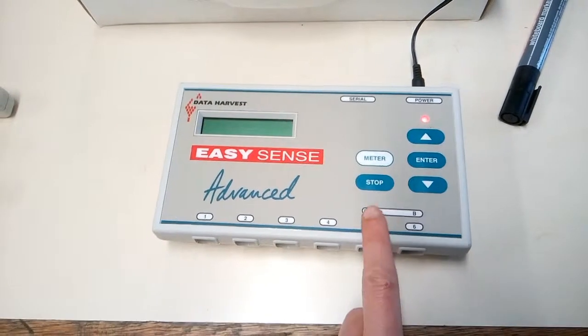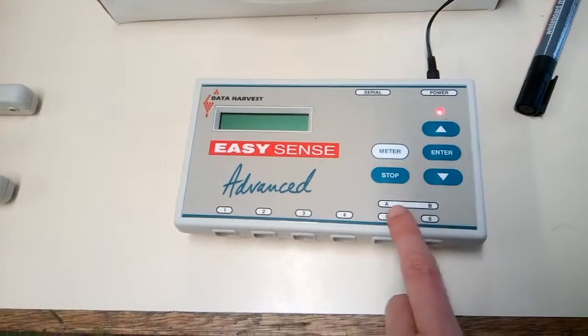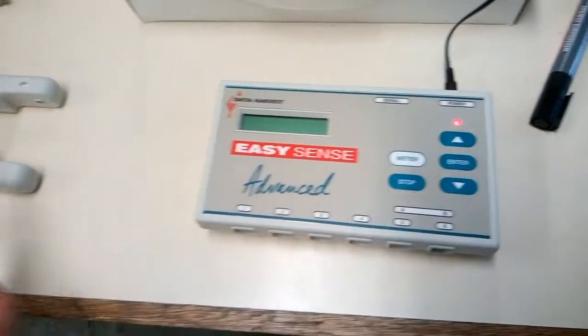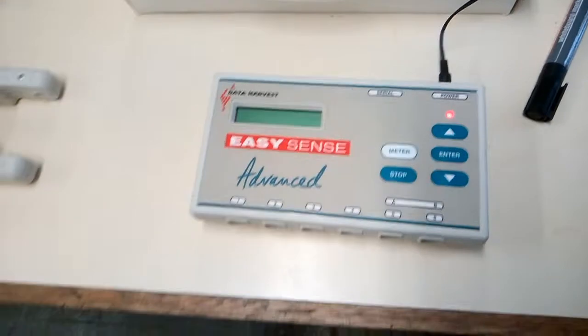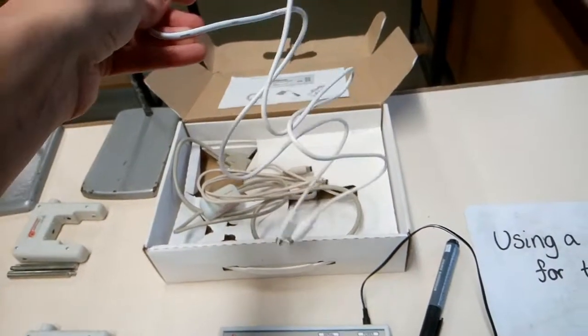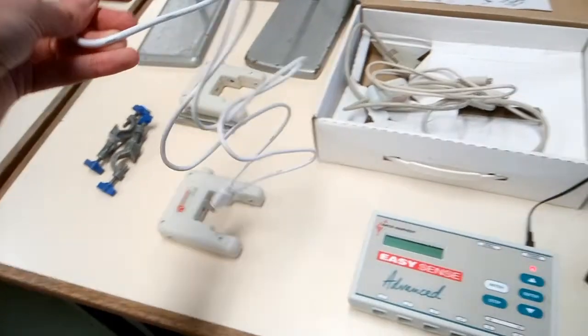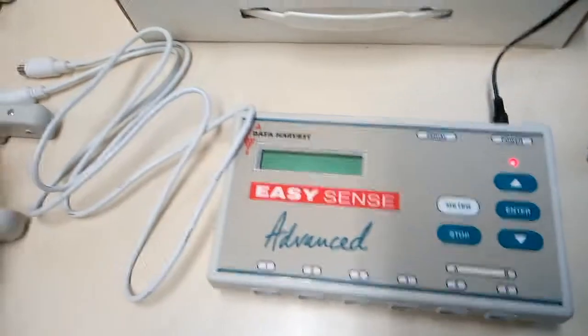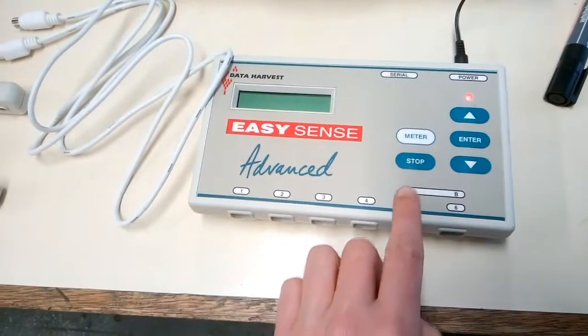The data logger's got six different inputs because they can do loads of different things with different sensors. Today we're just going to use these two inputs, and if you notice, these are numbered one to six. These ones have got letters A and B, so these are the only two that we're going to be using today. You need to connect your light gate up with port A. To do that, you need one of these cables. We're just going to connect up one light gate with port A on the data logger. We've got a port there to plug into the light gate and plug it in to that one there.